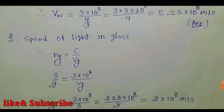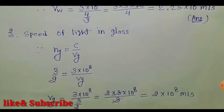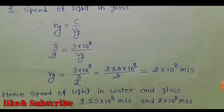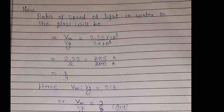For the speed of light in glass: NG equals C divided by VG. NG is 3/2 and C is 3×10⁸, so VG equals 3×10⁸ divided by 3/2. After solving, the 3s cancel and we get 2×10⁸ meters per second. The ratio of speed of light in water to speed of light in glass is 9:8.